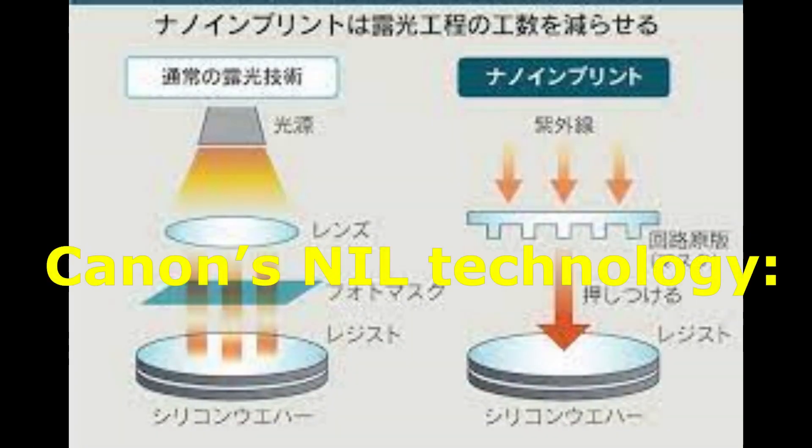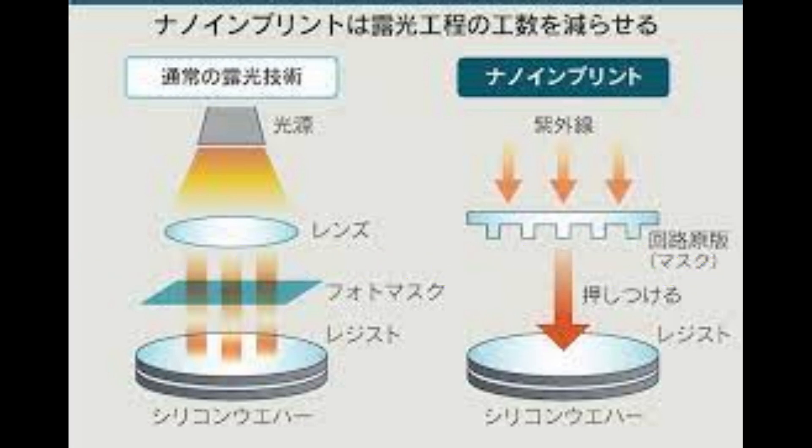With Canon's NIL technology, a circuit pattern mask is pressed directly onto the resist on the wafer. By eliminating the optical system, it is possible to faithfully reproduce the fine circuit pattern on the mask.